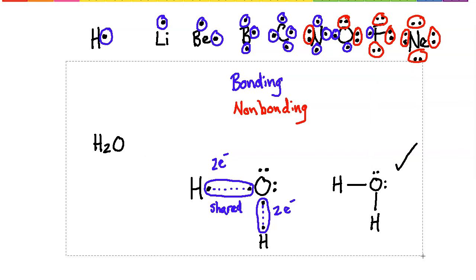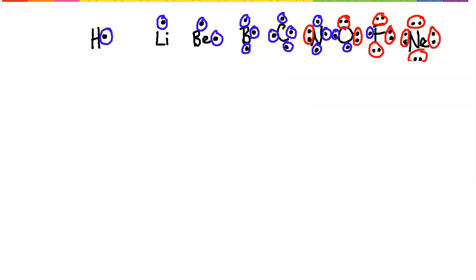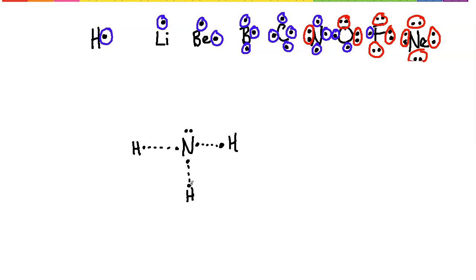Let's try nitrogen instead of oxygen. Nitrogen has five electrons total. The hydrogens still have one each. Nitrogen has one pair and three unpaired electrons, so I need three hydrogens to bond with those three unpaired electrons. The structure of NH₃ — ammonia — shows nitrogen with three bonds, each going to a hydrogen, plus one non-bonding electron pair remaining on top of the nitrogen.